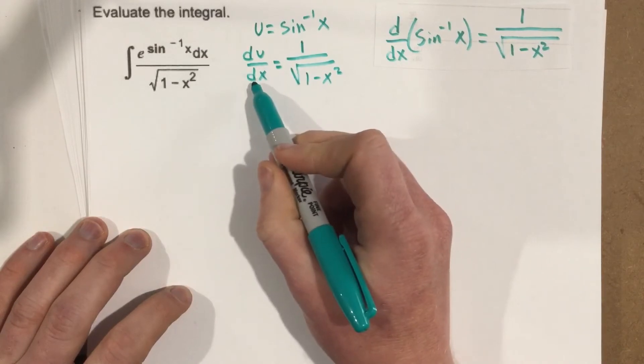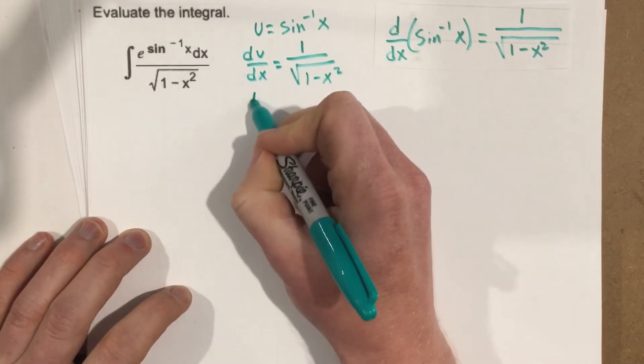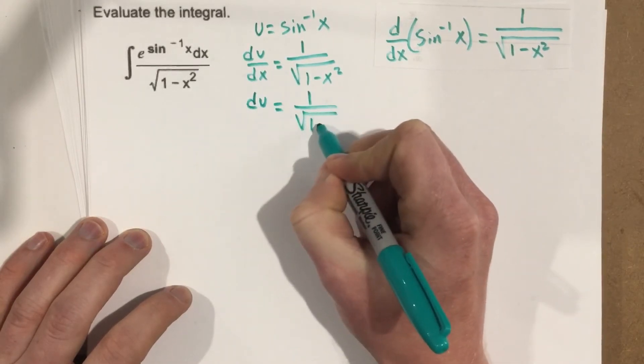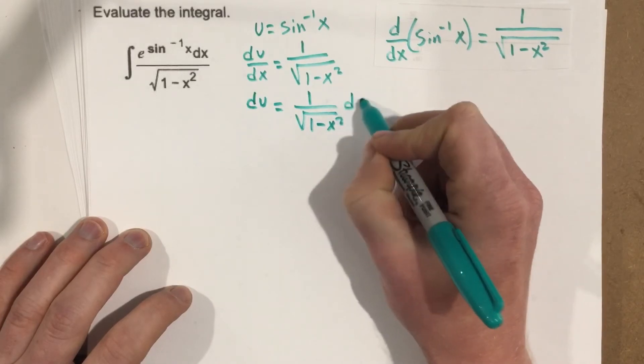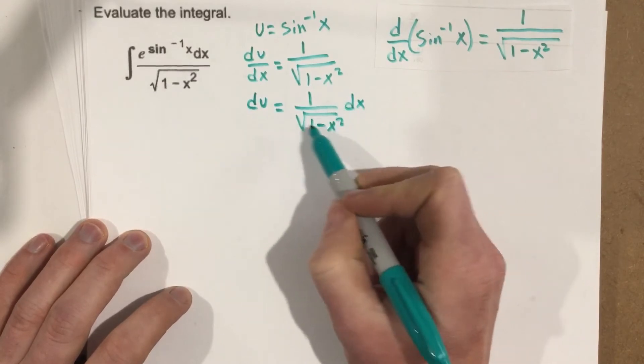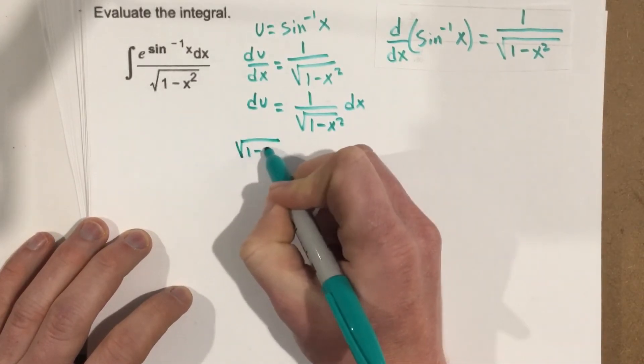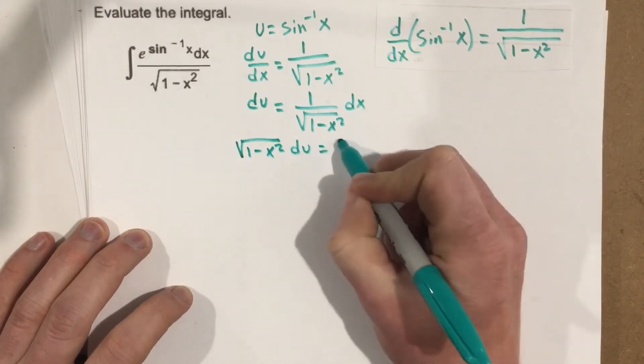We're going to solve for dx just like we have the whole time, so multiply by dx. So we have du equals 1 over root 1 minus x squared dx. And now we're going to multiply by this reciprocal, so we're just going to get the root of 1 minus x squared du equals dx.